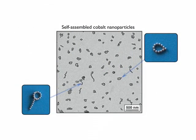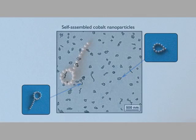The structures formed by interacting supermagnet beads are identical to those observed in self-assembled arrays of magnetic nanoparticles. This image illustrates a range of structures formed by cobalt nanoparticles. We find exactly the same mixture of rings, clusters and chains as observed in the supermagnet bead experiment.